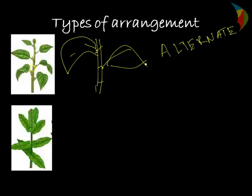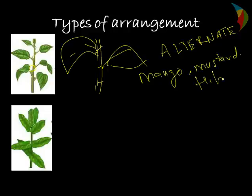The most common examples of alternate phyllotaxy are mango, mustard, and hibiscus plant. Now the second type is opposite phyllotaxy.